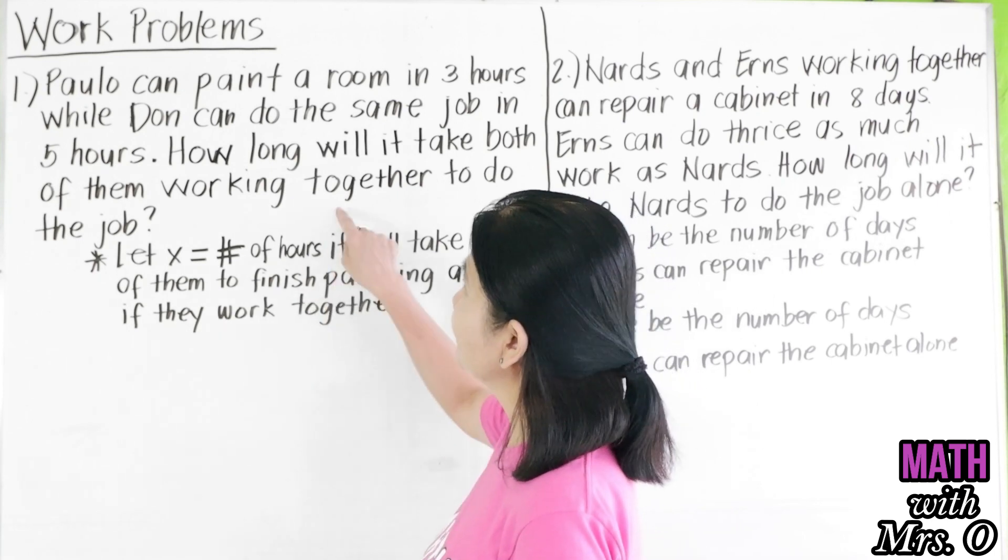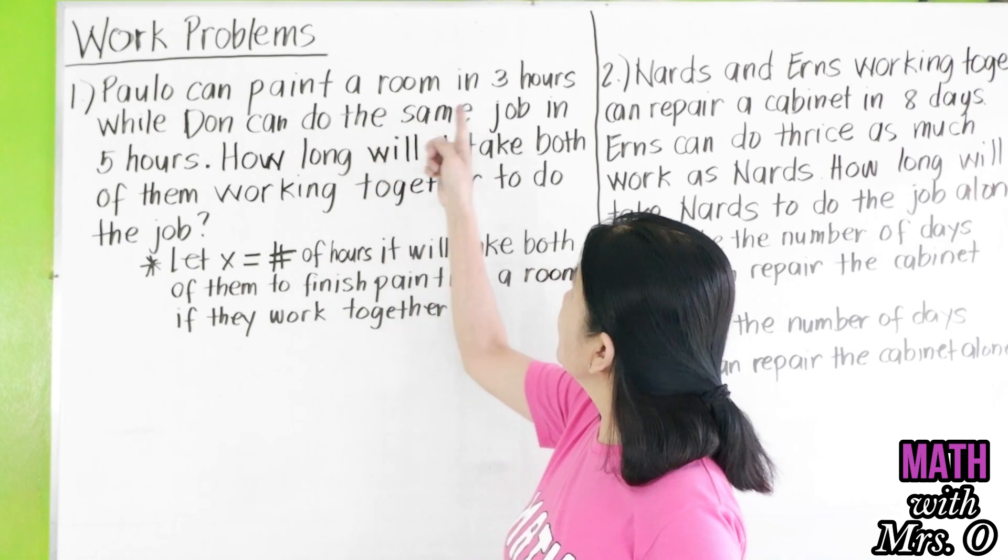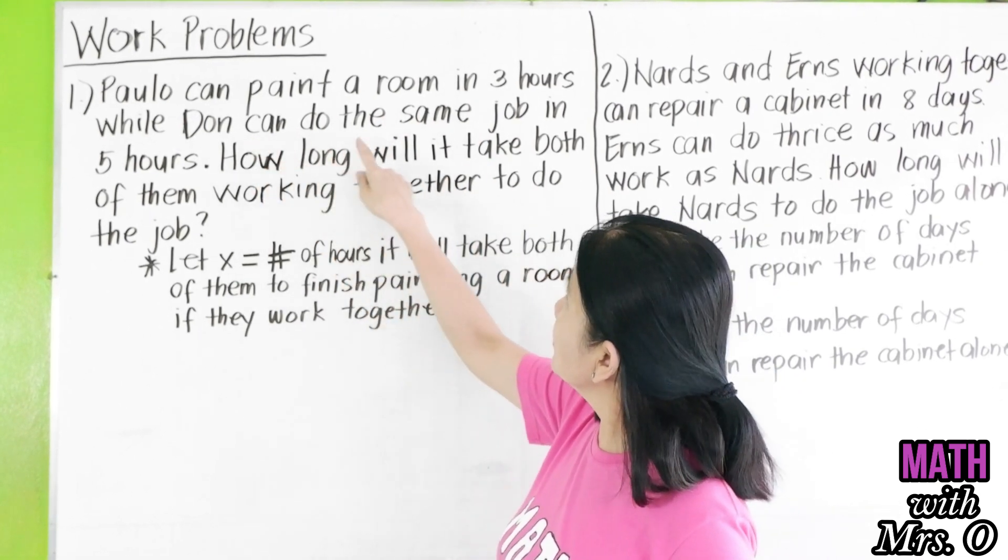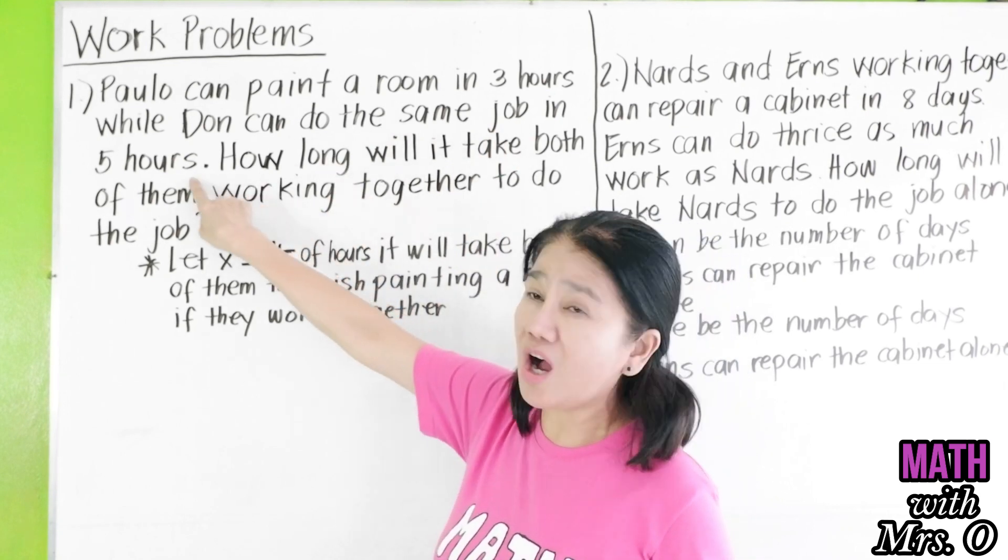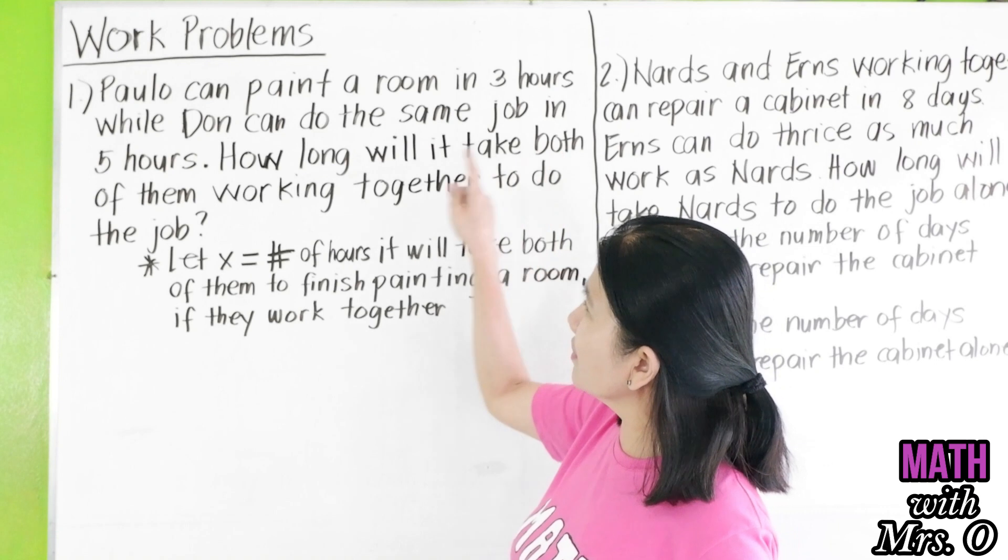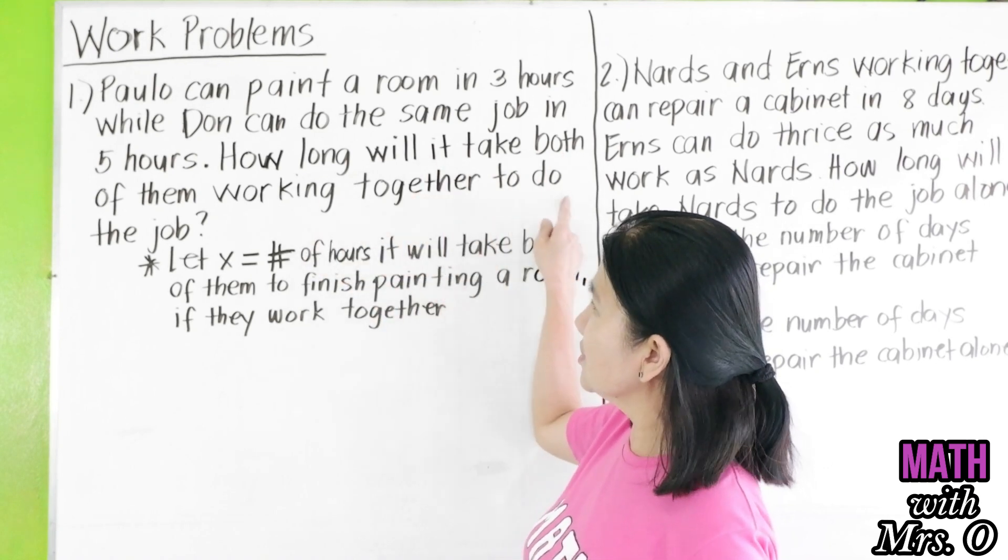Problem number one. Paolo can paint a room in three hours, while Don can do the same job in five hours. How long will it take both of them working together to do the job?